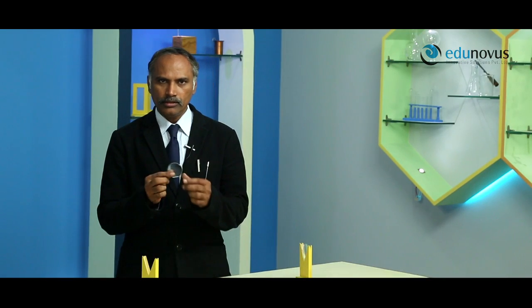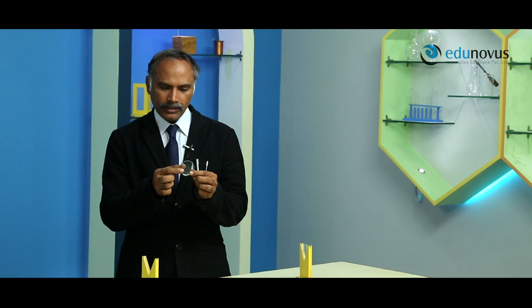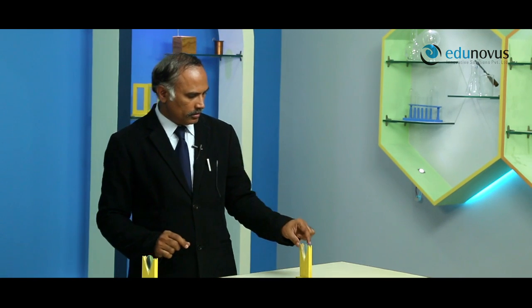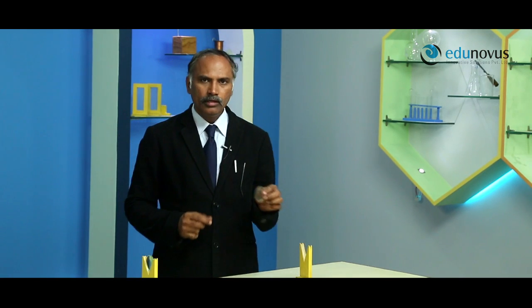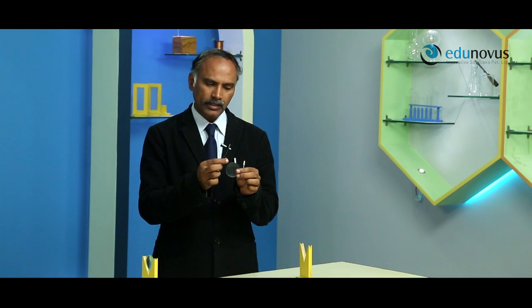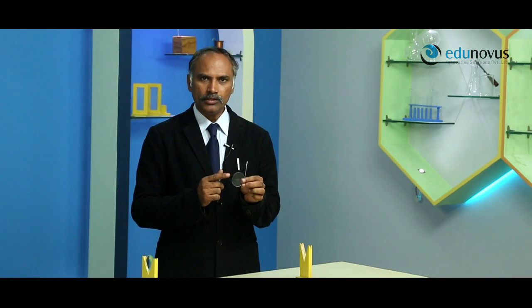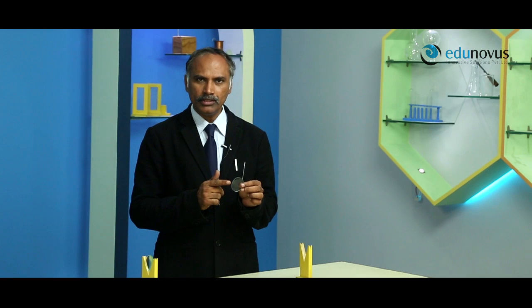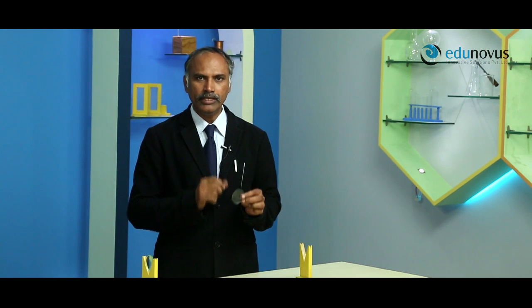A convex lens is thick at the middle and thin at the edges. It is also known as a converging lens because it converges the light rays incident on it. A concave lens is thin at the middle and thick at the edges. It is also known as a diverging lens because it diverges the light rays incident on it.